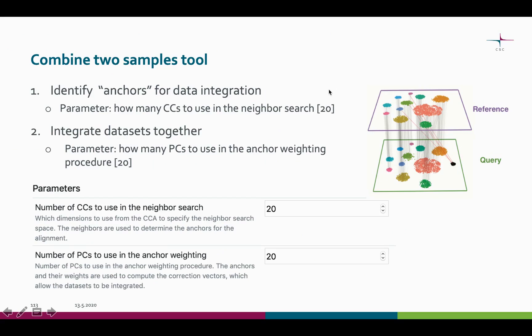In Chipster, we offer two parameters for this combination step. The first parameter, number of CCs to use in the neighbor search, is used in the anchor identification step. The second parameter gives the number of principal components to use in the anchor weighting process. Both have a default value of 20 and you can well start with those default values.